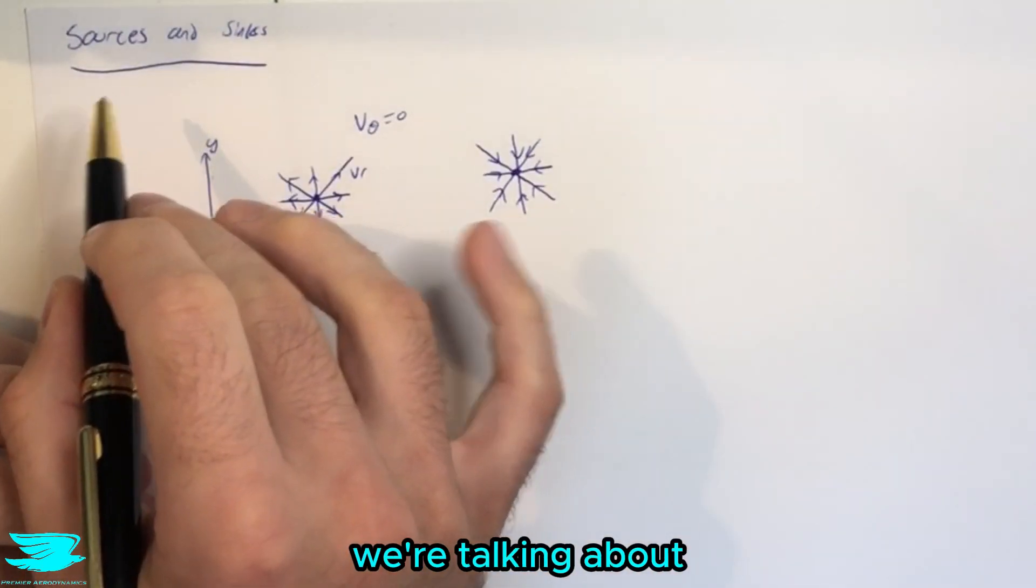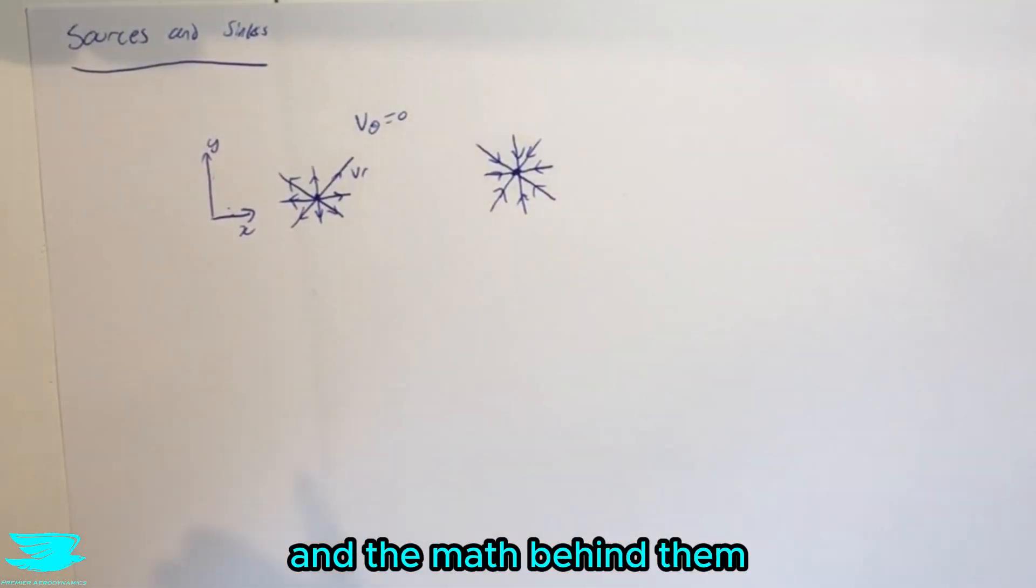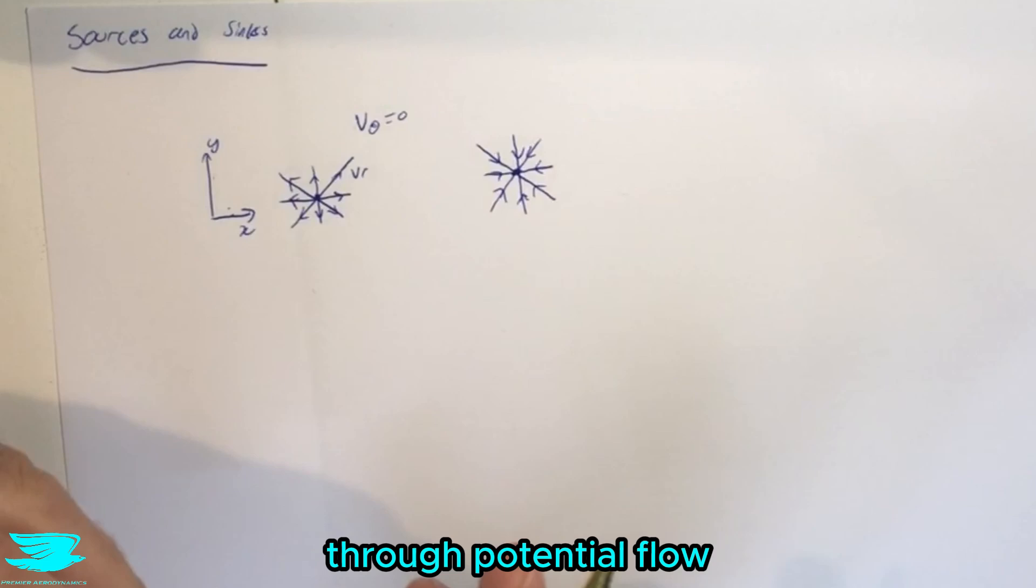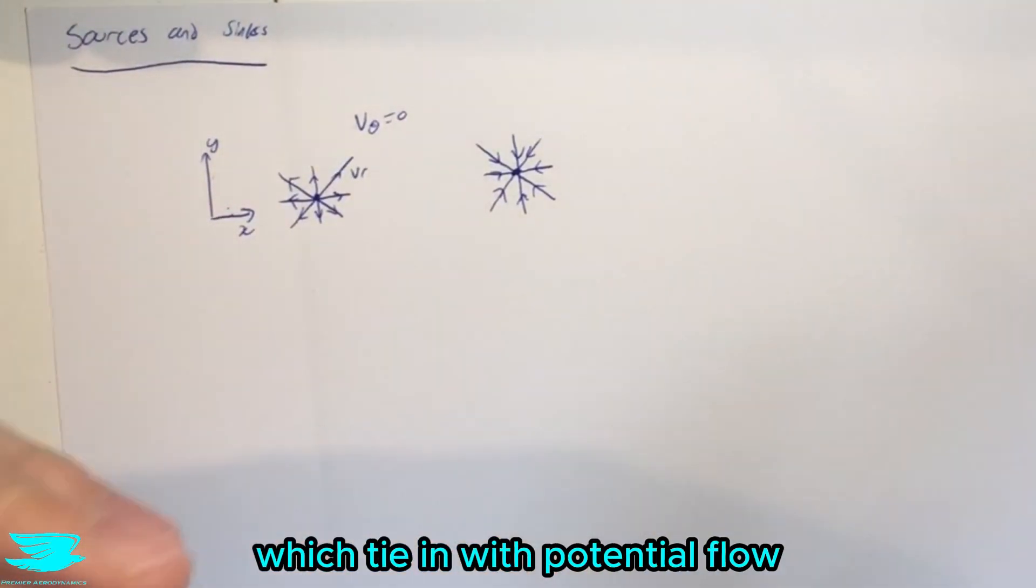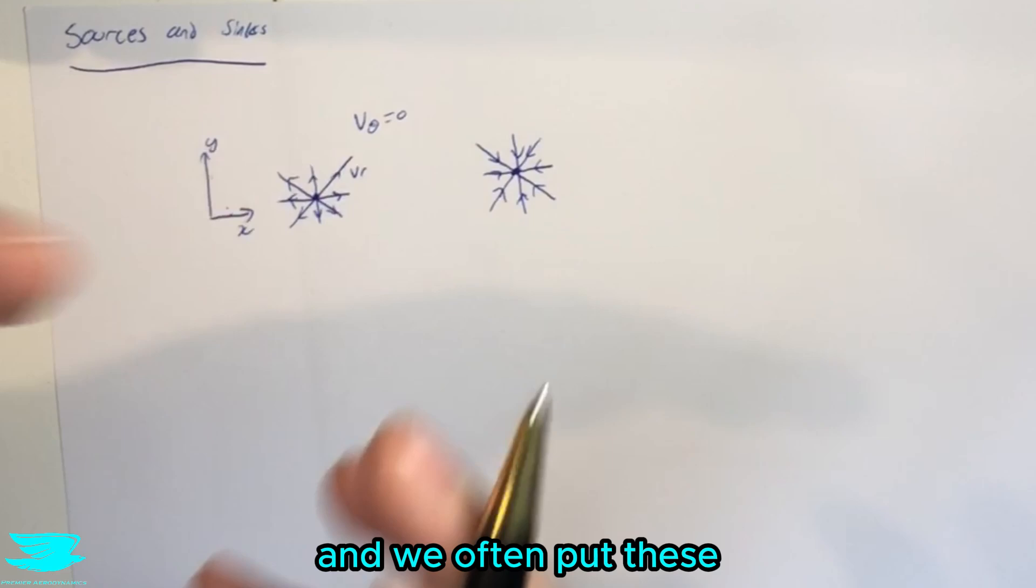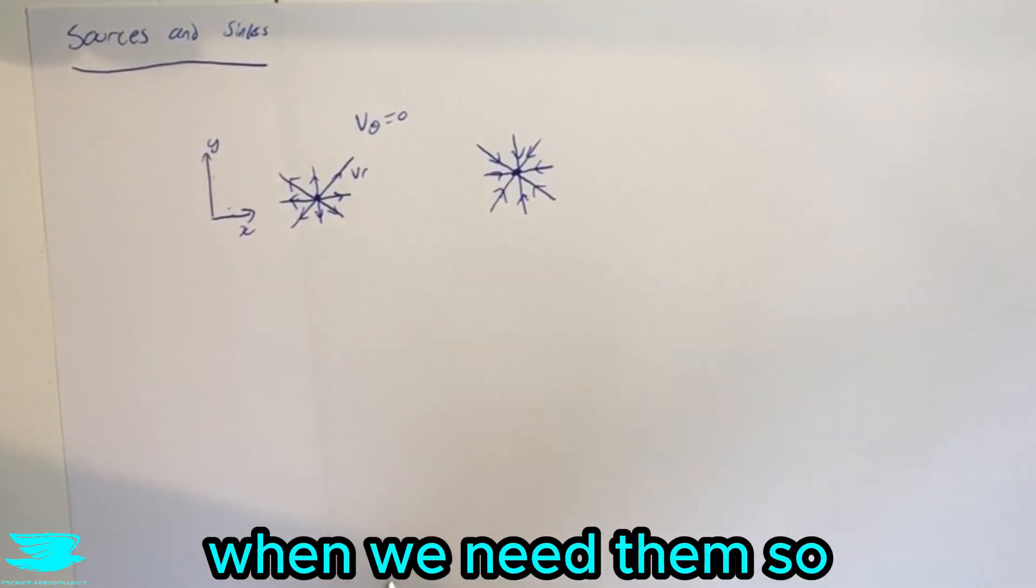What is up amigos? Today we're talking about sources and sinks and the math behind them. So last week we went through potential flow and what it is. This week we'll be going through sources and sinks which tie in with potential flow, and we often put these objects into potential flow when we need them.